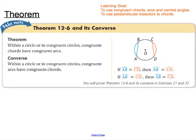Our third theorem relates congruent chords with congruent arcs. If we're within the same circle, or in congruent circles, congruent chords have congruent arcs. The converse of this one is true as well. You'll notice that all of these proofs are exercises in the textbook, and we'll be working on those the next time we meet.